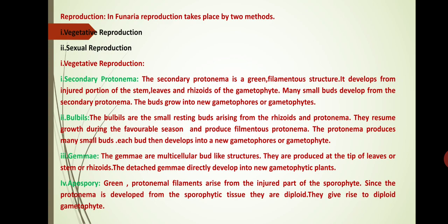Lastly we discuss about apospory. Green protonema filaments arise from the injured part of the sporophyte. Since the protonema is derived from the sporophytic tissue, they are diploid. They give rise to a diploid gametophyte.